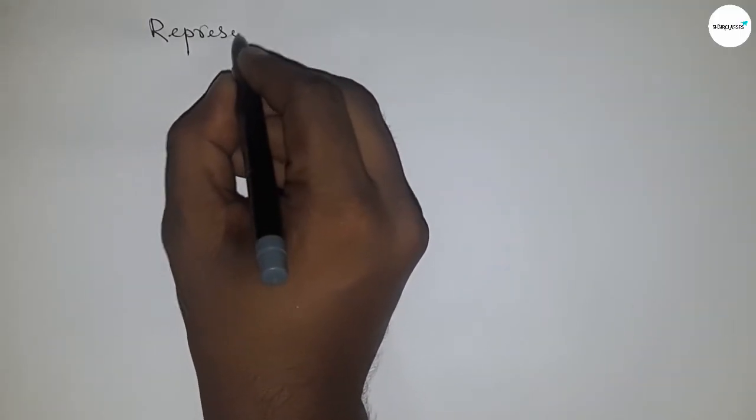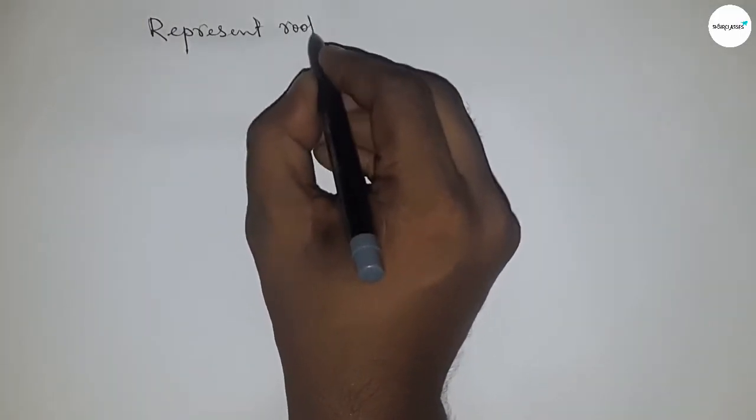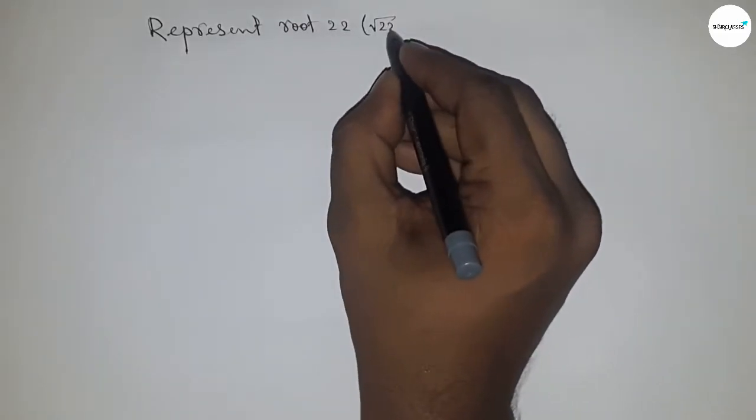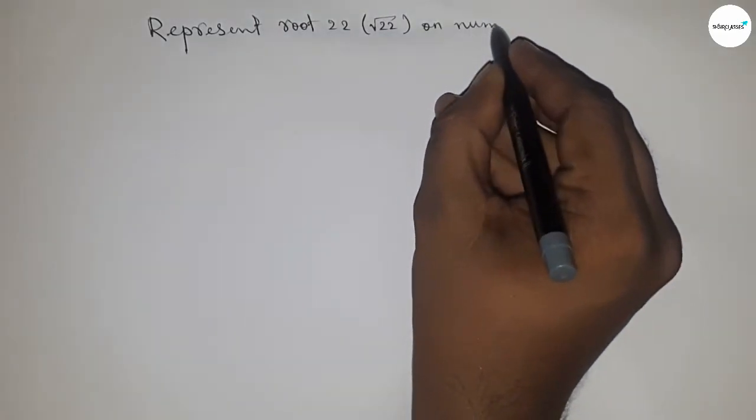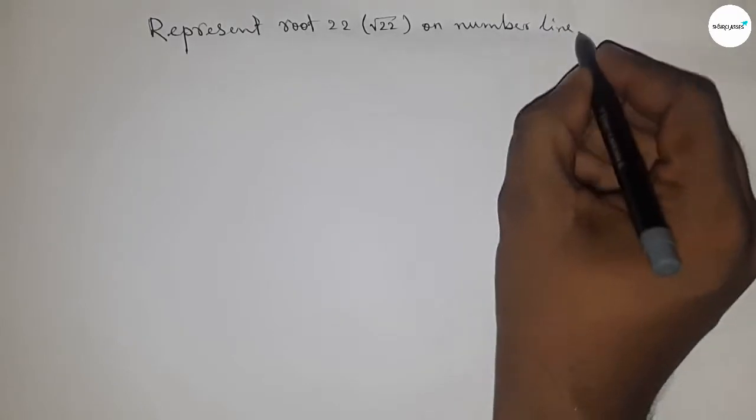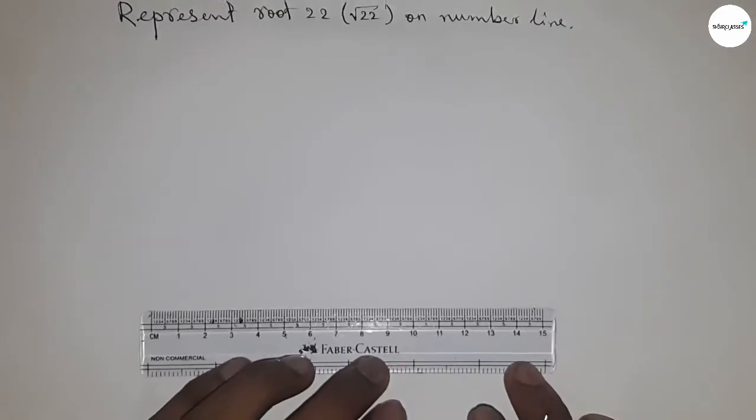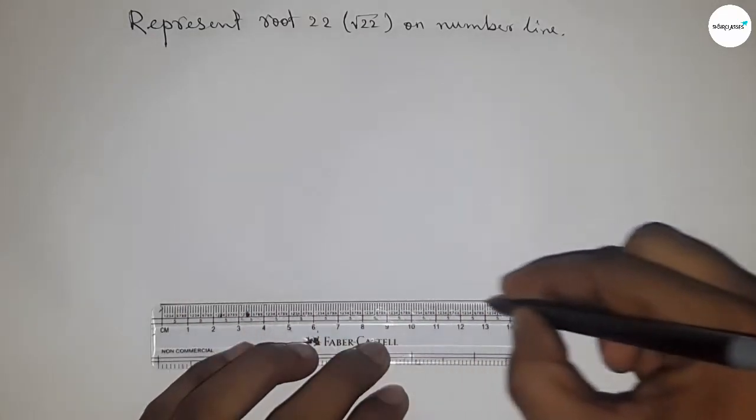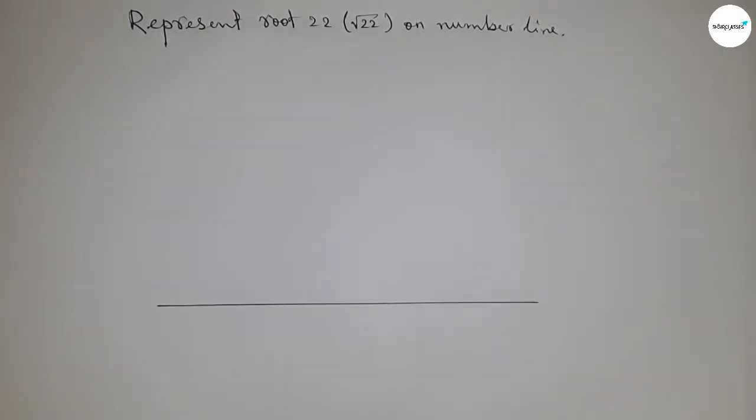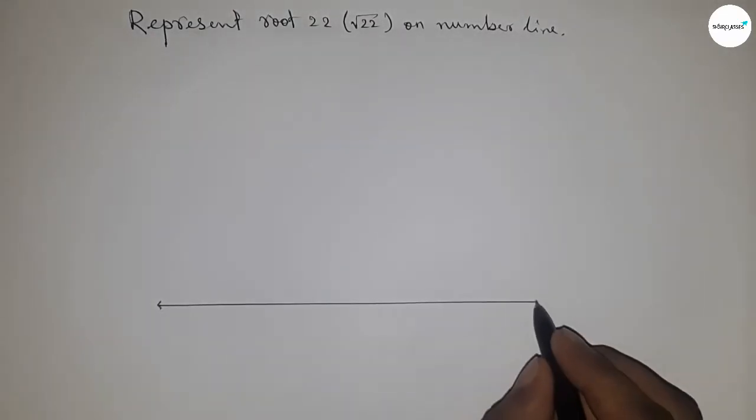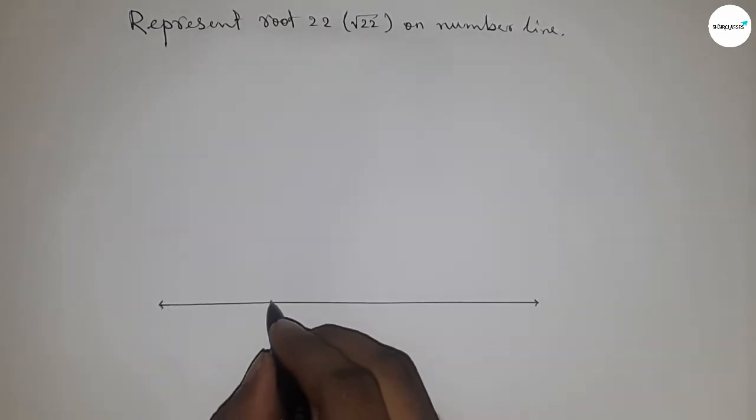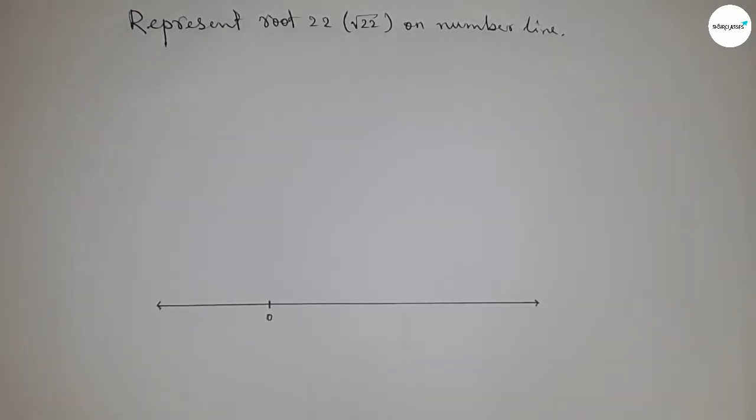Hi everyone, welcome to SSR classes. Today we're talking about how to represent root 22 on number line. Let's start. First of all, we have to draw the number line. So first, drawing a line of any length and mark the ends with arrows, and taking this is zero.